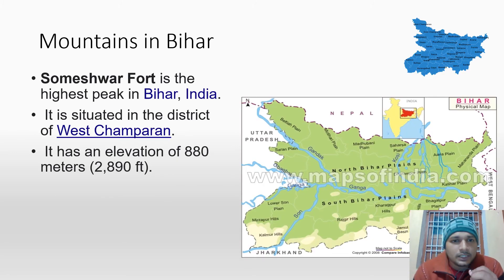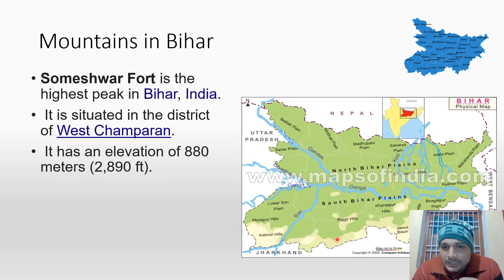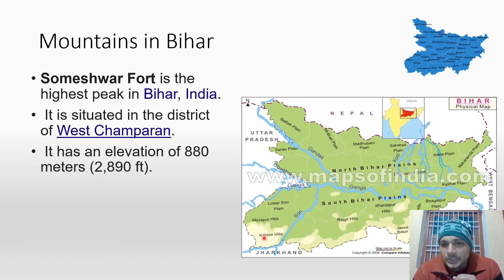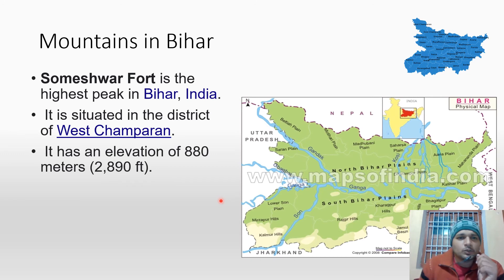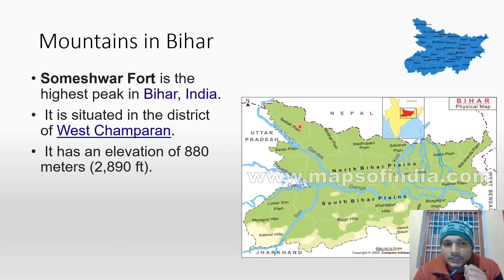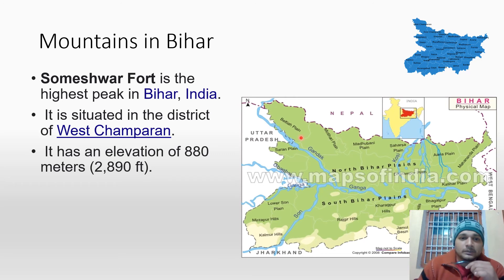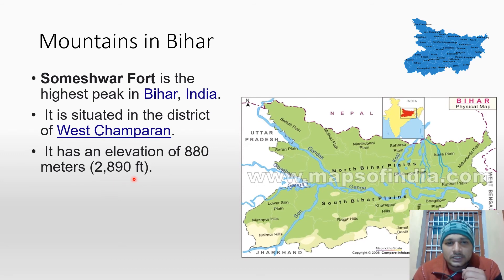We will now see mountains in Bihar. We can see the Kaimur Hills, Rajgir Hills, and then there is the Jamui Basin. The rest of the parts are flat, and the concentration of hills is in the southern part of Bihar. The highest peak of Bihar is 880 meters, which is equivalent to 2,890 feet.